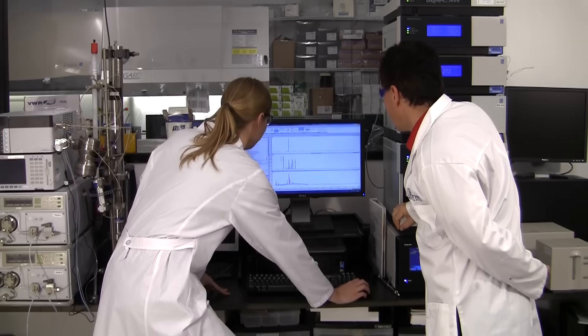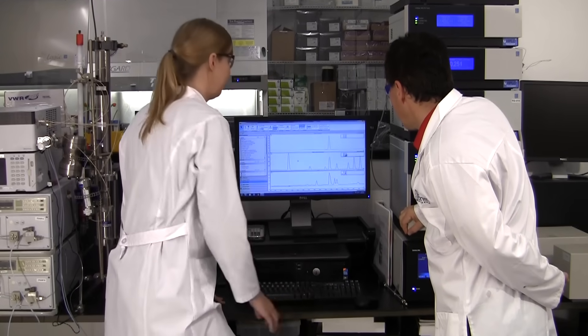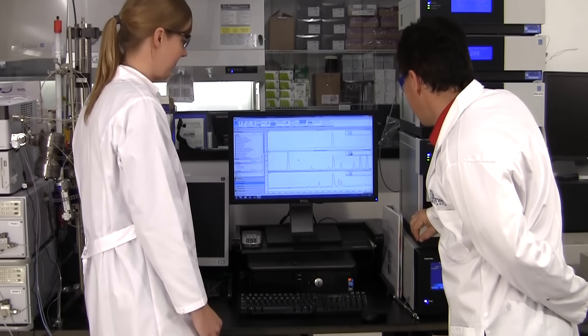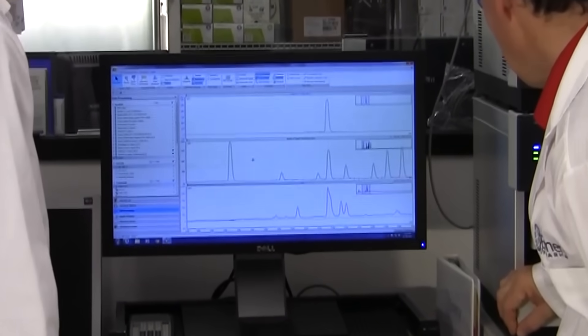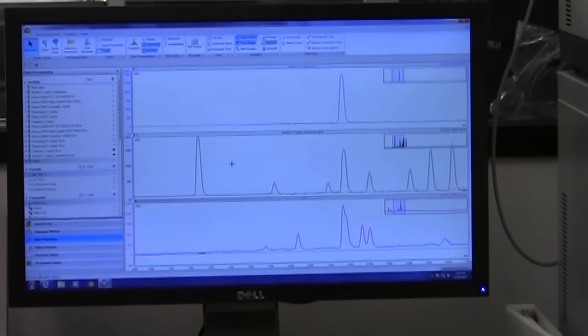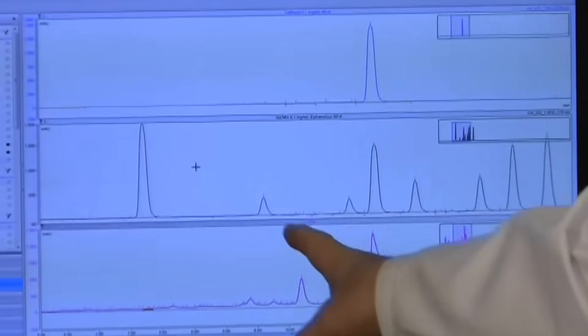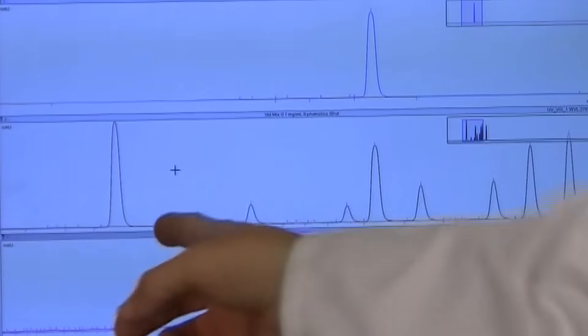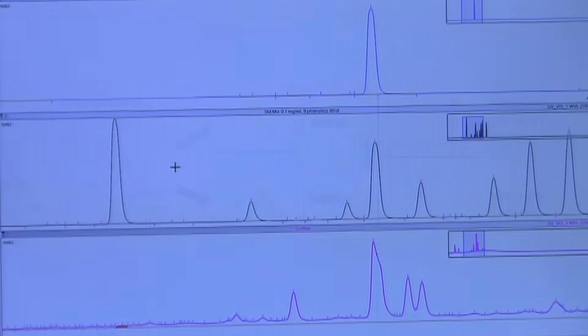HPLC with Tandem Mass Spec Detection, or LC-MS-MS, is another versatile tool that allows detection of analytes at low concentrations. Compounds are ionized and fragmented, and specific ions are filtered to detect only those belonging to the analytes of interest.